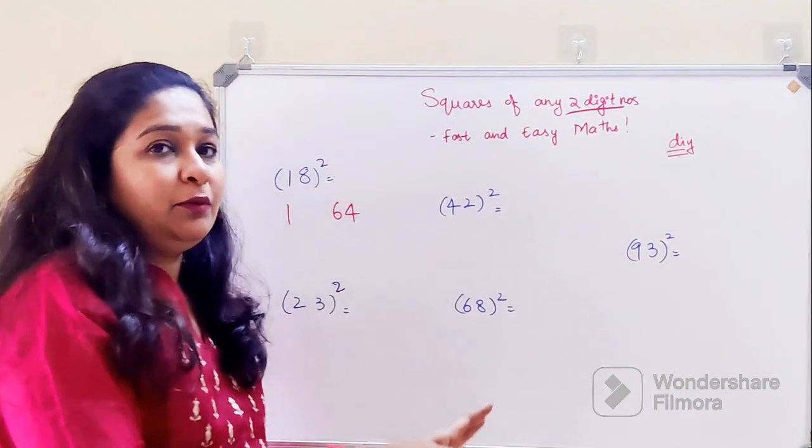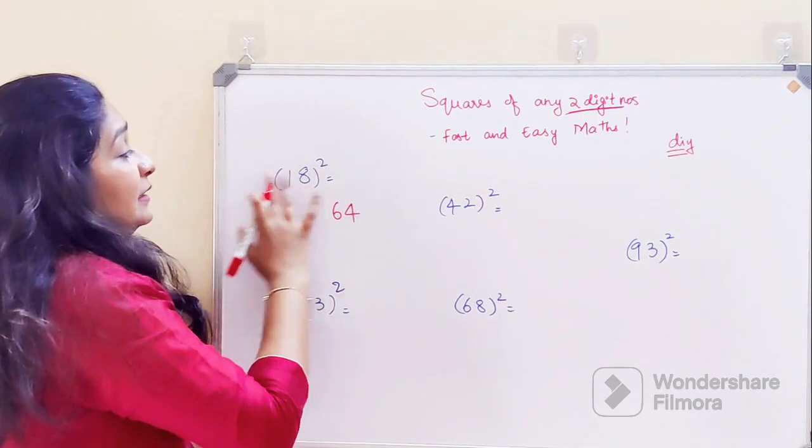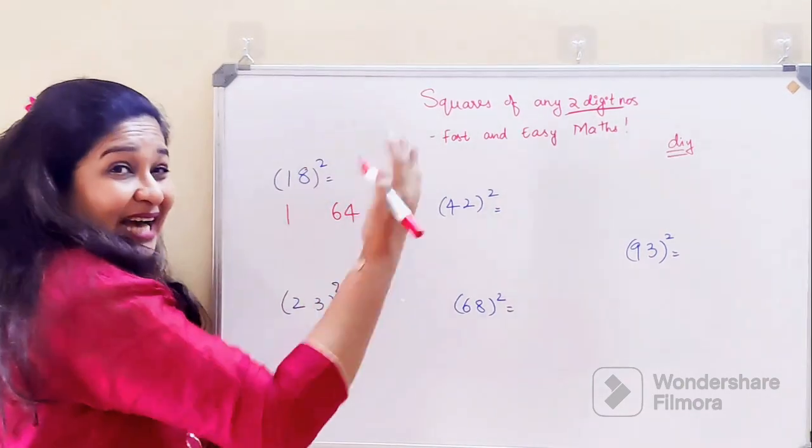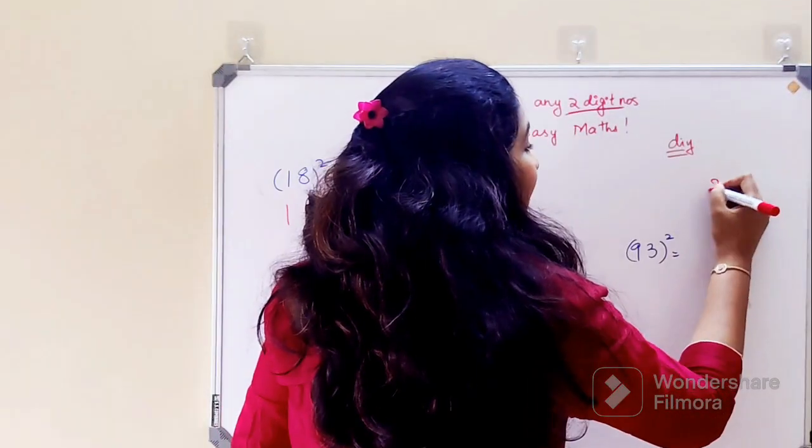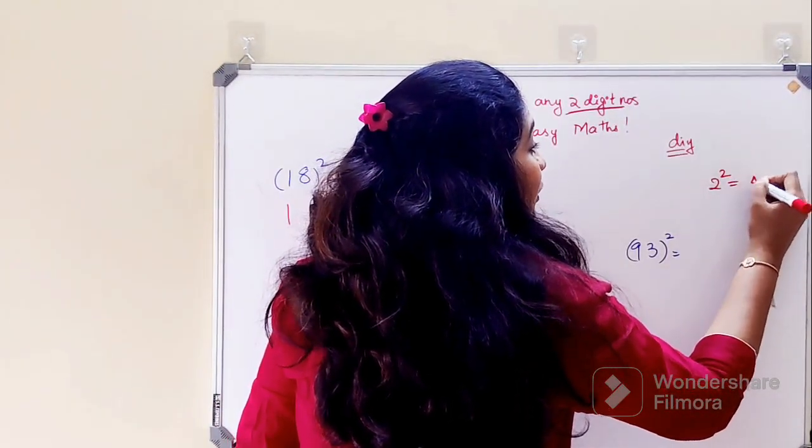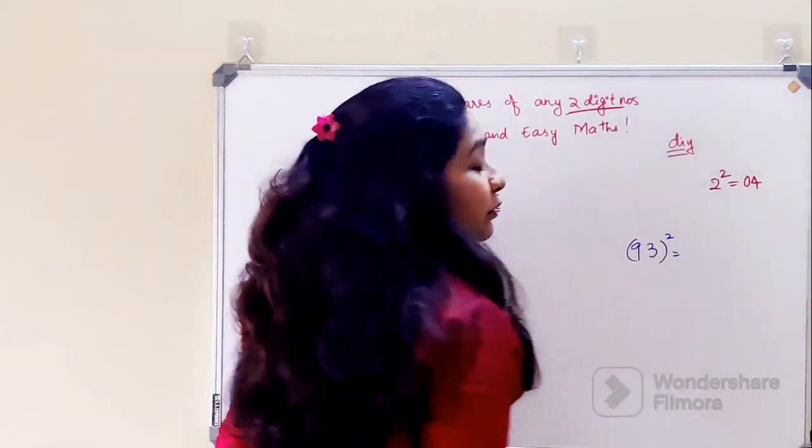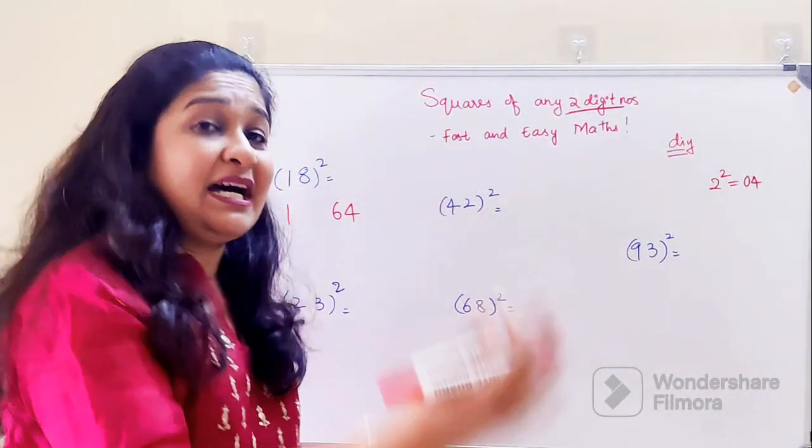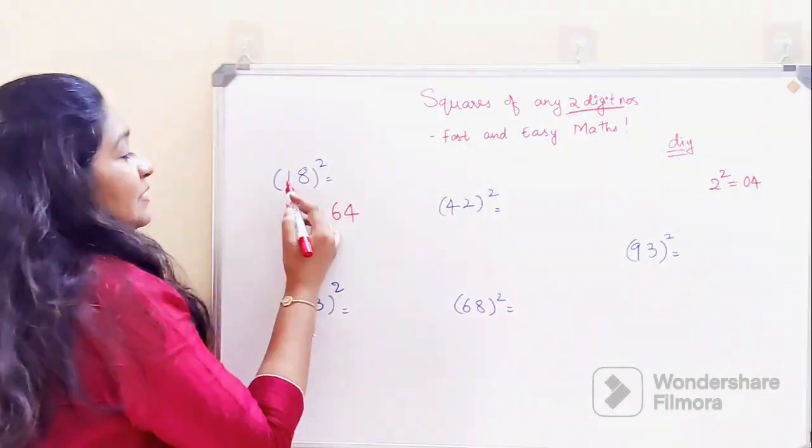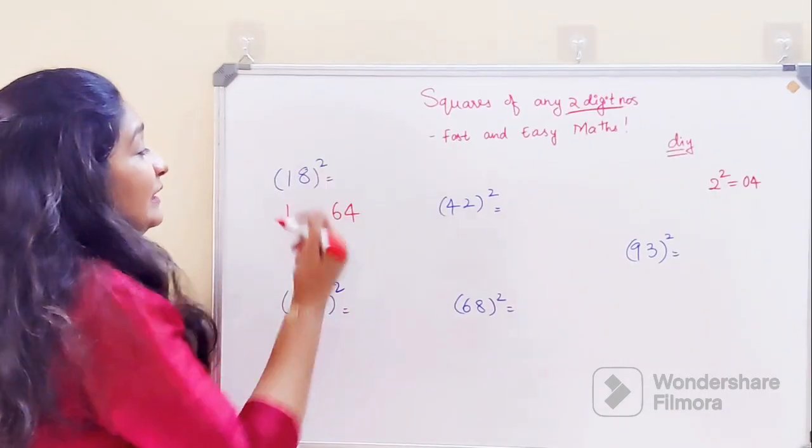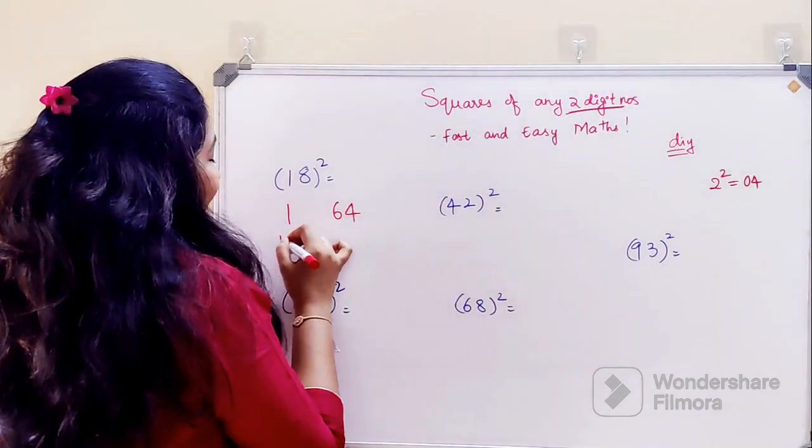I'll tell you right now: whenever you have to write the square of the last digit, it will always be in two-digit form. Please understand, we know that square of 2 is 4, but for this trick we use 04. This is only for the last digit; the first digit is okay. Next, what we'll do is 1 into 8 gives 8, 8 into 2 gets you 16.